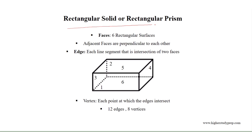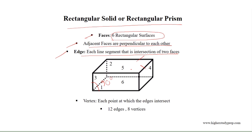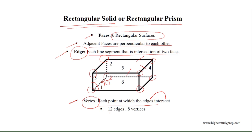A rectangular solid, or rectangular prism, has six rectangular surfaces, where adjacent faces are perpendicular to each other as they create right angles. Each line segment that is the intersection of two faces is known as an edge, and each point at which the edges intersect is known as a vertex of the rectangular solid. For a rectangular solid, there are eight vertices and twelve edges.